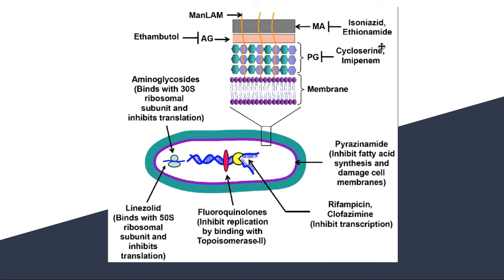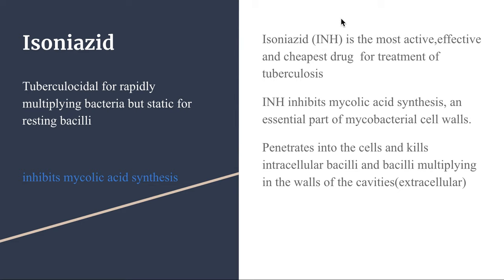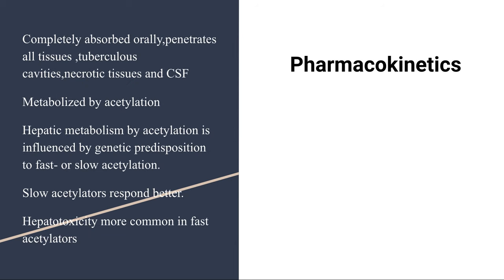Let's start with isoniazid. Isoniazid is the most active, effective, and cheapest drug for the treatment of tuberculosis. It inhibits mycolic acid synthesis by penetrating into the cell and forming a metabolite that combines with an enzyme necessary for mycolic acid synthesis, thereby inhibiting mycobacterial cell wall synthesis. It can penetrate inside the cell and kill intracellular bacilli as well as bacilli living in the walls of cavities. It is completely absorbed orally and penetrates all tissues, tuberculous cavities, necrotic tissues, and CSF.